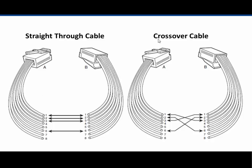To create a crossover cable traditionally, you would cross pins 1 and 3 and pins 2 and 6, giving you a Fast Ethernet crossover cable. Fast Ethernet and Ethernet only used two of the pairs of wires for sending and receiving. Today, gigabit and 10 gigabit cables use all four pairs of wires, so a crossover cable like this is no longer needed.